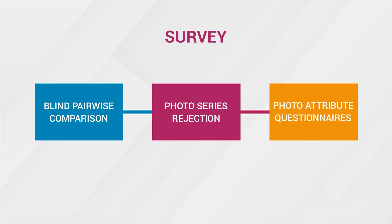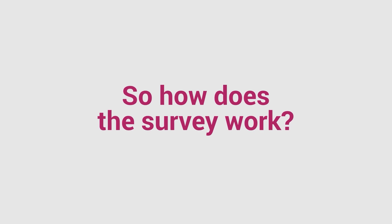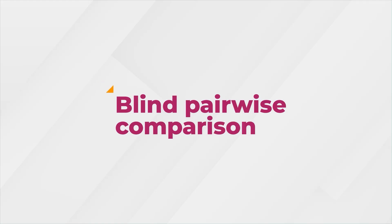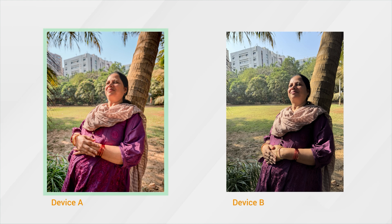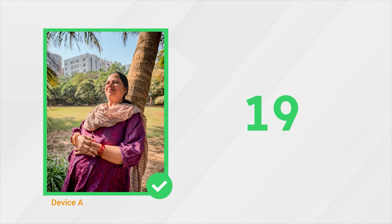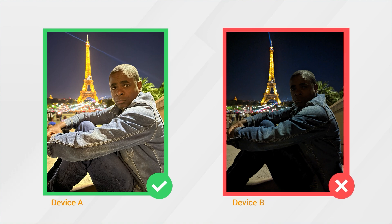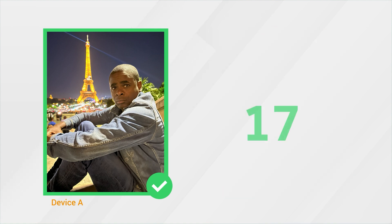This survey phase is composed of three distinct parts. First, there is a blind comparison where participants choose between two photos of the same scene taken with different cameras. As more participants select the same photo, the photo's score increases. This process repeats for each different device and then continues on to the next scenes.